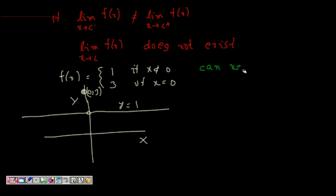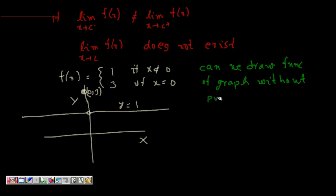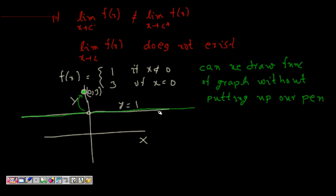Based on our definition, we ask: can we draw the graph without putting up our pen? We drew the line very fast and came along, but at x equals 0 the value is 3, so I have to move from y equals 1 up to (0, 3) — I have to lift my pen, then come back down and continue. So at x equals 0 I had to put up my pen.